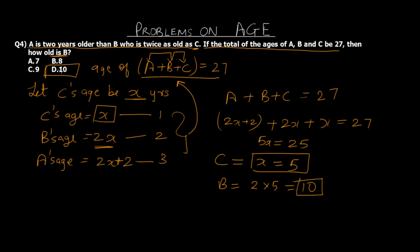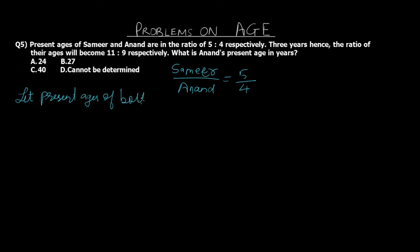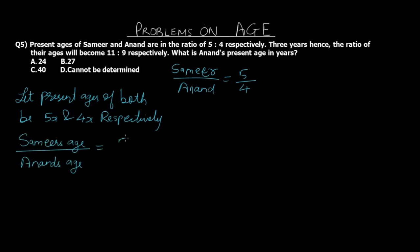Question 5: Present ages of Samir and Anand are in the ratio of 5 to 4. Three years hence, the ratio of their ages will become 11 to 9. What is Anand's present age? Mathematically, Samir upon Anand equals 5 by 4. Let the present ages of both be 5x and 4x respectively — x is a multiplication factor. The ratio 5x upon 4x preserves the 5 to 4 ratio since x cancels out, and multiplying by x gives their actual ages.